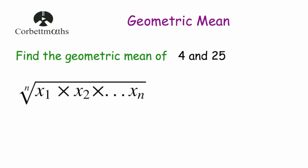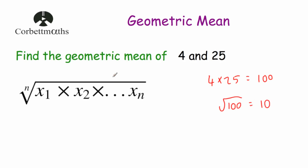So here we've got a question and our question says find the geometric mean of 4 and 25. To find the geometric mean of 4 and 25, we multiply these numbers together: 4 times 25 is 100. And then there are two numbers, so we're going to take the square root of 100, and the square root of 100 is 10. So the geometric mean of 4 and 25 is 10.